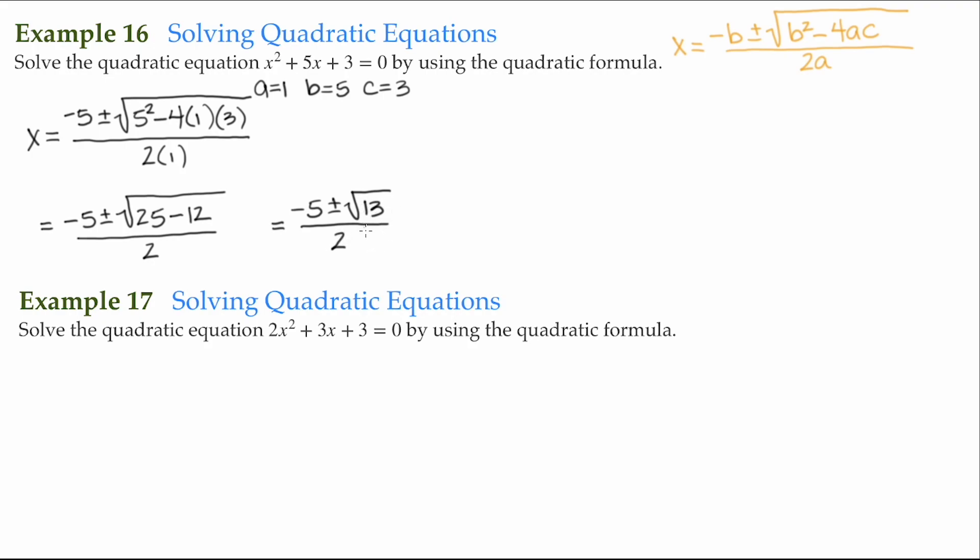Now, the square root of 13 doesn't simplify. If we were to come up with a decimal equivalent, it's this long protracted decimal equivalent. This is our irrational value. So, since we have this irrational value, we can just leave our solution just like this. Now, don't forget, this means x is equal to negative 5 minus the square root of 13 all over 2, and x is equal to negative 5 plus the square root of 13 all over 2. This is just the shorthand. Rather than have to write it twice, that's just the shorthand. But both of these are going to be the solution to our quadratic equation here, x squared plus 5x plus 3 is equal to 0.